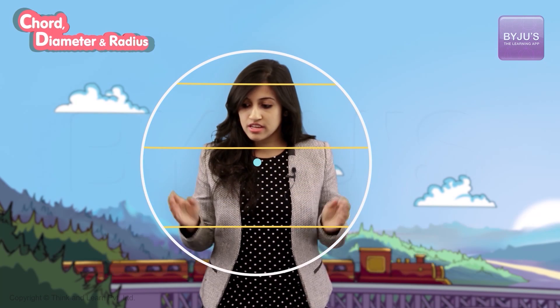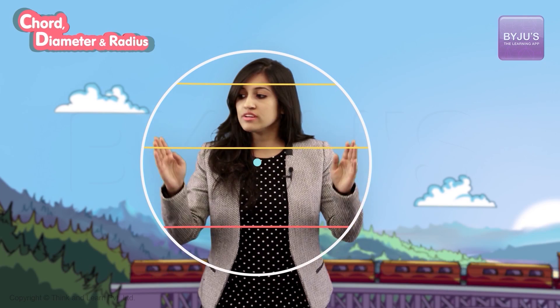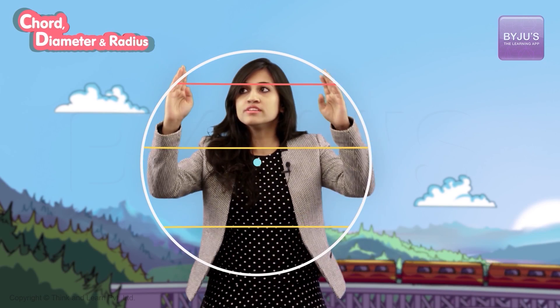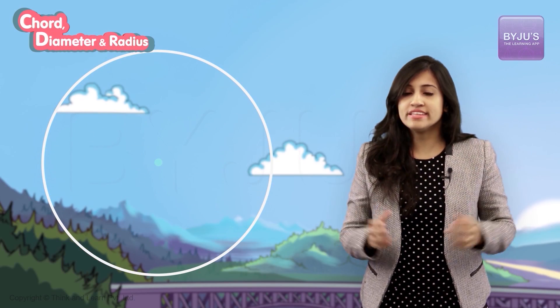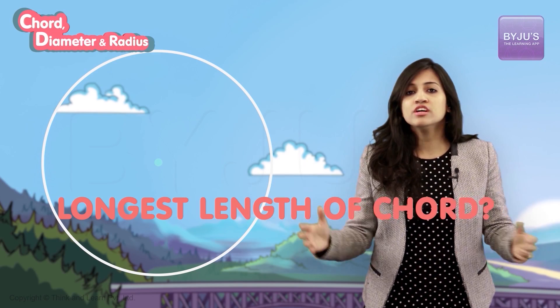The chord can be of so many lengths. This is a chord, this is a chord, this is a chord — all of these are chords. Now that we're talking about chord lengths, since this circle is a closed space, you agree with me, there has to be some limitation to the longest length of the chord possible.